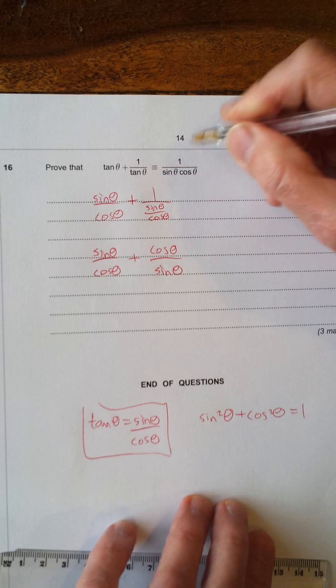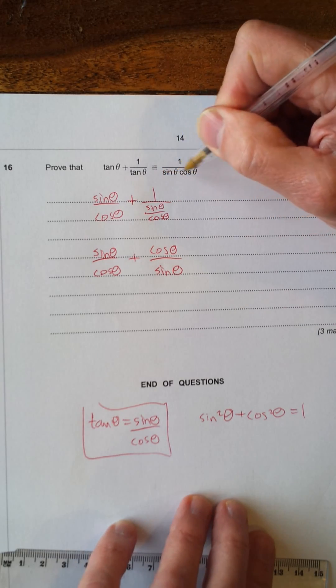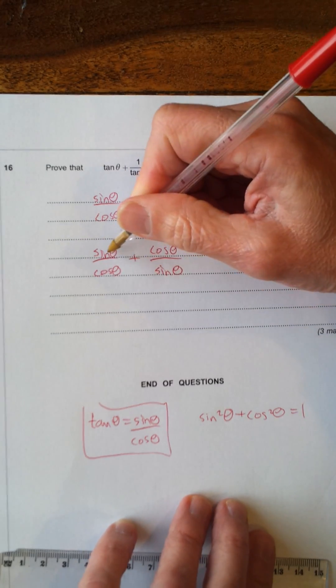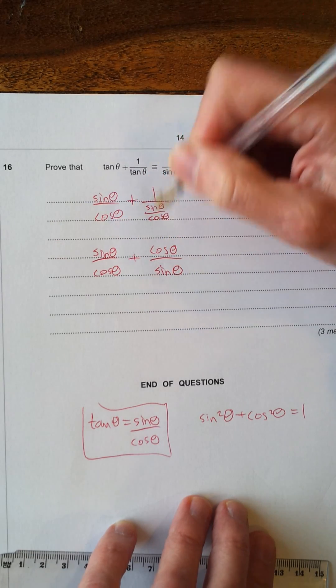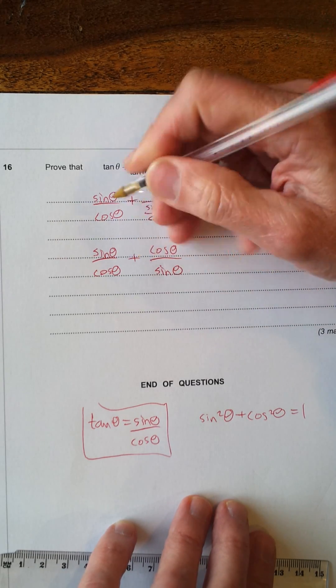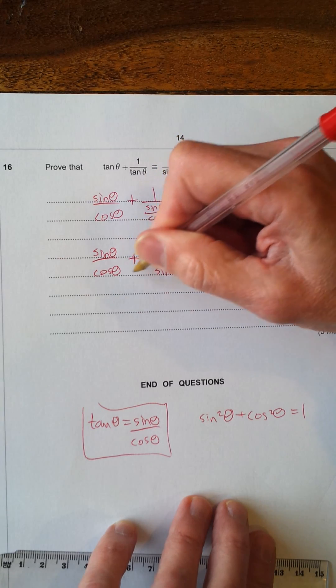Now, looking at the right-hand side here, it's one term, sin θ cos θ. We've got two terms here, sin θ/cos θ + cos θ/sin θ. To make it into one term, what we need to do is cross-multiply. Put these two together and put this up to here and this up to here.